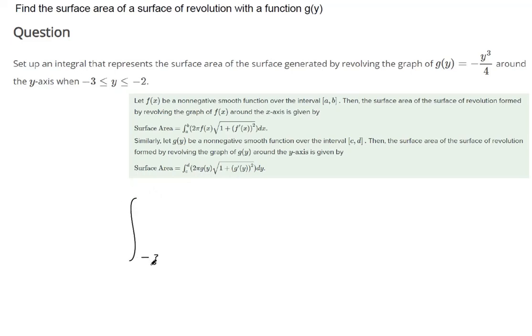So we're integrating from negative 3 to negative 2. And it's 2 pi, and g of y just means your function of y, which is right here. And then we multiply that by the square root of 1 plus the derivative of g of y squared.